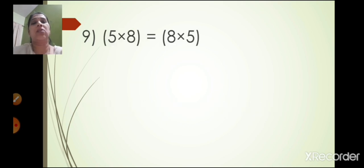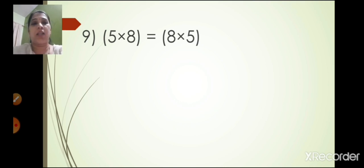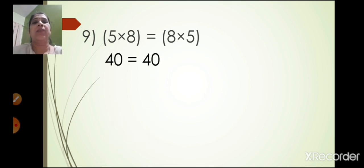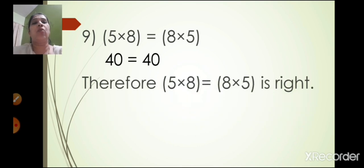The ninth one: 5 into 8 is equal to 8 into 5. Now 5 eights are 40, and 8 fives are also 40. So 40 is equal to 40. Therefore 5 into 8 is equal to 8 into 5 is right.